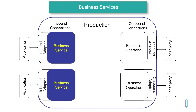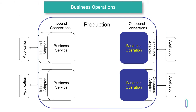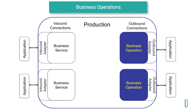In a production, the inbound connection points are known as business services. Business services accept all the data that goes into a production. They connect to systems and applications that need to be part of the integration solution. Some applications that may send data to a production include a hospital's admitting system, a lab system sending results, a car auction's registration system, or almost any other computer-based system.